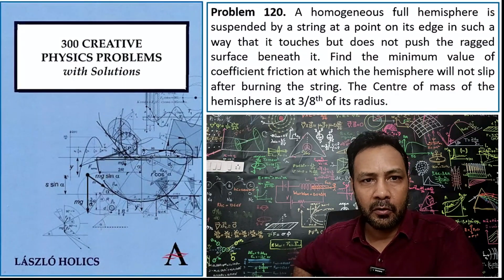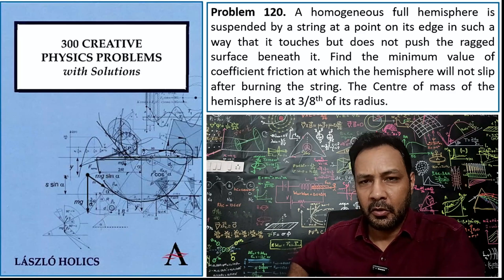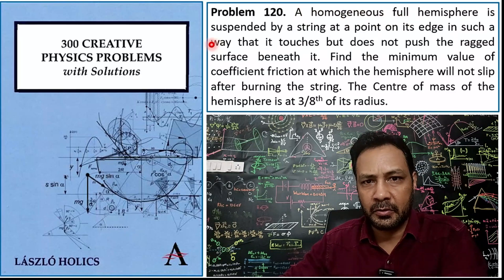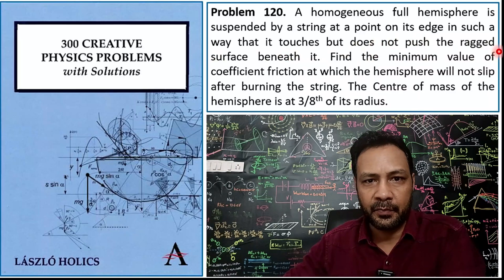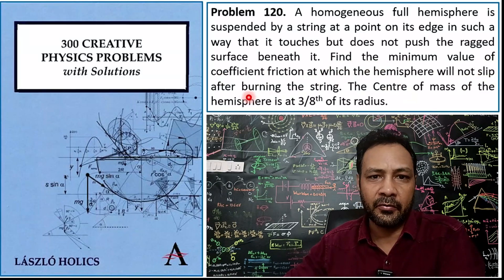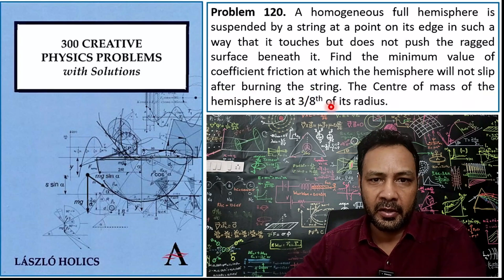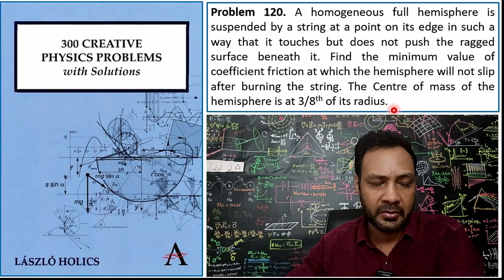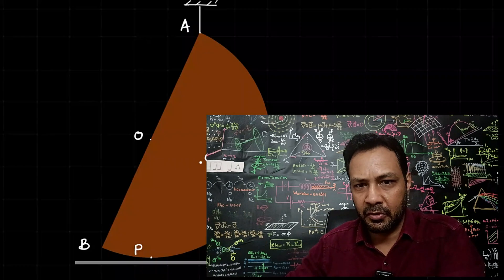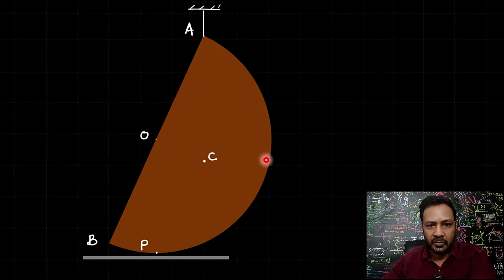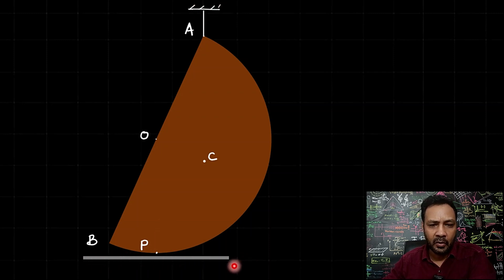Hello all. Let's see this very good problem of RBD from '300 Creative Physics Problems' by Laszlo Holex. The question states: a homogeneous full hemisphere is suspended by a string at a point on its edge in such a way that it touches but does not push the surface. Find the minimum value of coefficient of friction at which the hemisphere will not slip after burning the string. The center of mass of the hemisphere is at 3/8 of the radius.